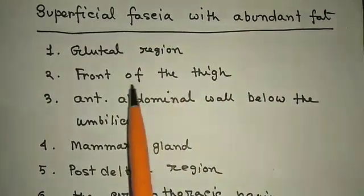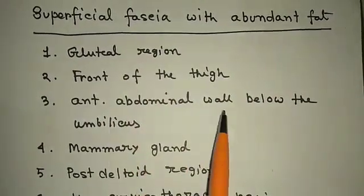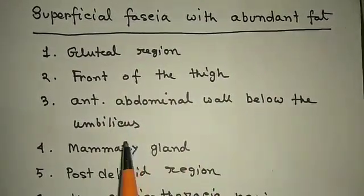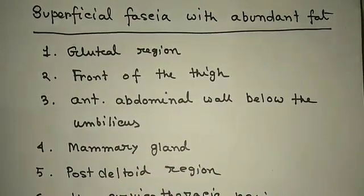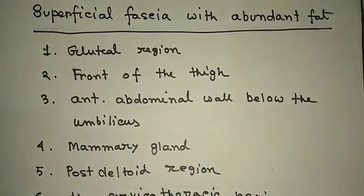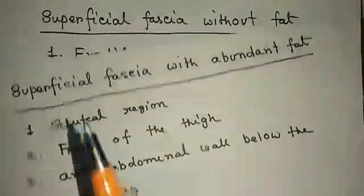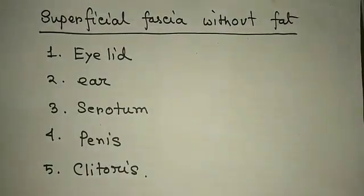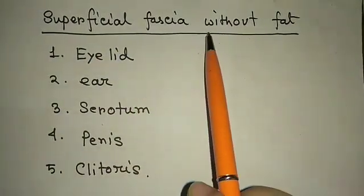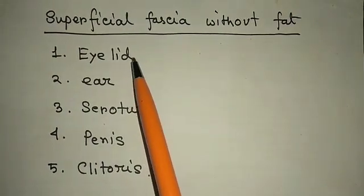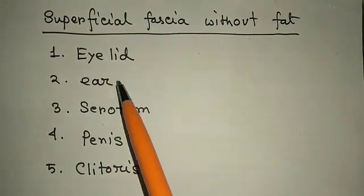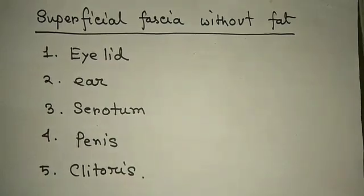Fat amount within the superficial fascia varies: it is abundant in the gluteal region, front of the thigh, anterior abdominal wall below the umbilicus, mammary gland, post-deltoid region, and cervicothoracic region. Superficial fascia is without fat in the eyelid, scrotum, penis, and clitoris.